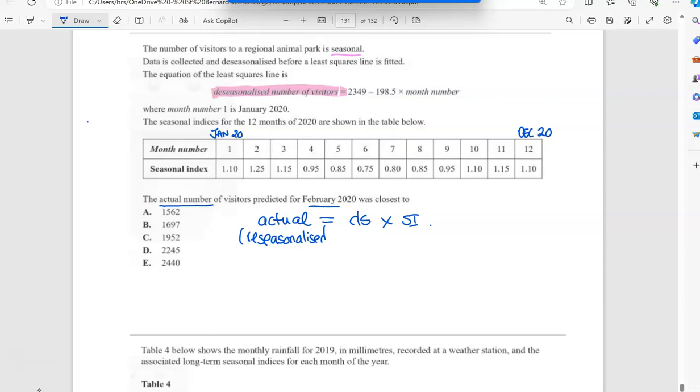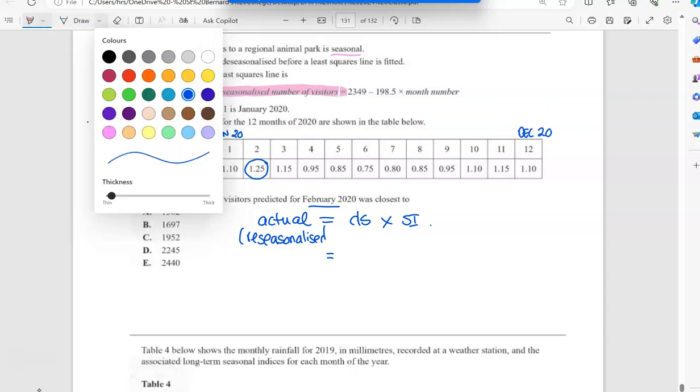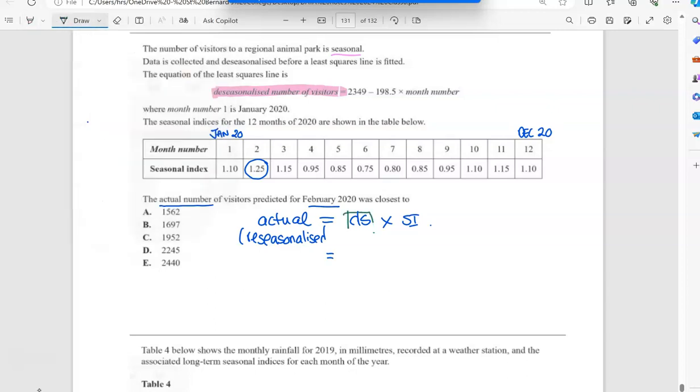We said actual is always the de-seasonalized value times the seasonal index. So we can use February's seasonal index there, but we need the de-seasonalized value. So this de-seasonalized value is what we're going to have to use this formula for. They said the actual number for February 2020, so that is actually month number two.